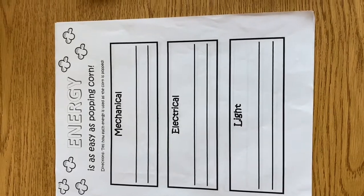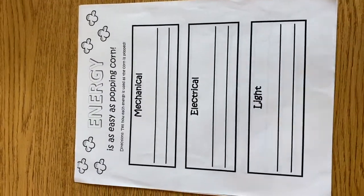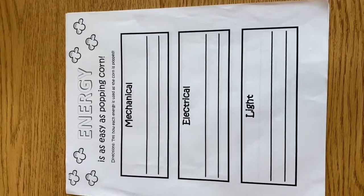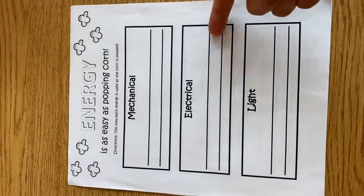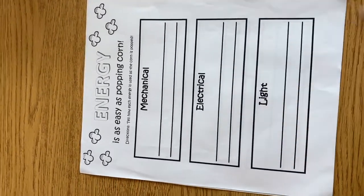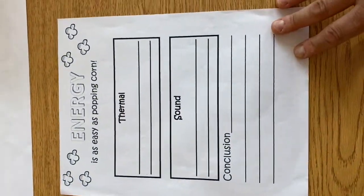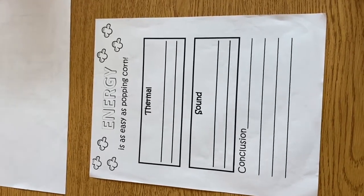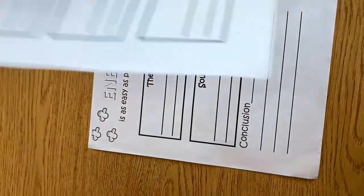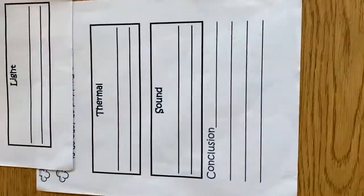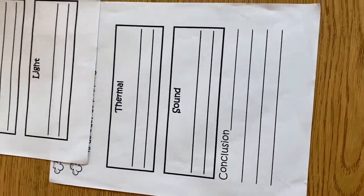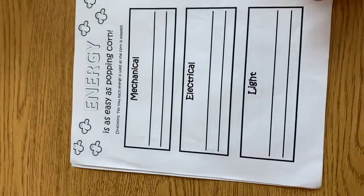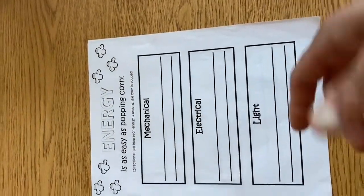you need to think about the different types of energy used as you're popping the popcorn. What is the mechanical energy being used and how is it being used? What is the electrical energy? Is there light energy? What about thermal or heat energy? And what sound energy is being used? And at what stage are you experiencing or noticing or observing all of these energies? And then what do you conclude about energy being used to pop popcorn? That's during the popcorn popping.